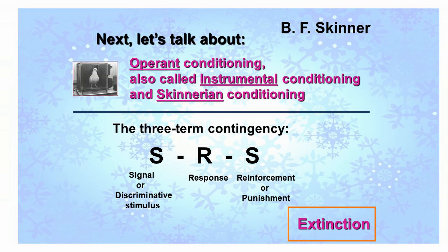You'll recognize classical conditioning, basically looking for stimulus substitution so that the CS begins to give rise to the same response as the UCS. But now we're going to move on and talk about another type of conditioning, another type of learning — operant conditioning, also called instrumental conditioning and called Skinnerian conditioning after B.F. Skinner. When we talk about operant conditioning, we're basically talking about learning to respond as a function of the consequences of our actions.